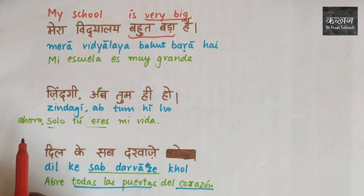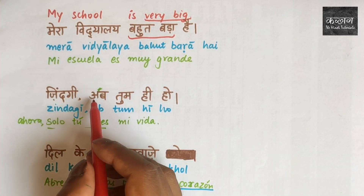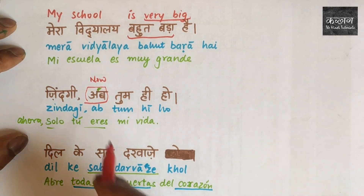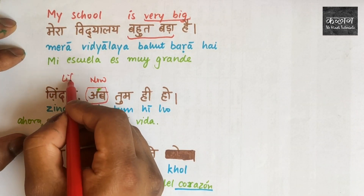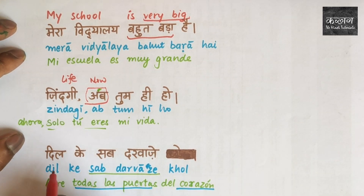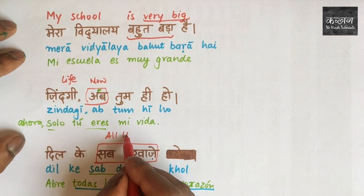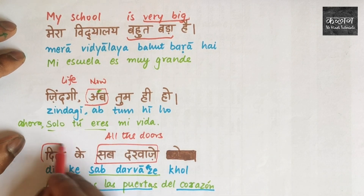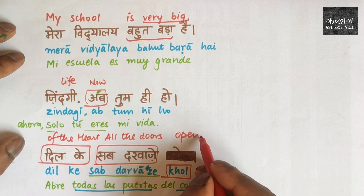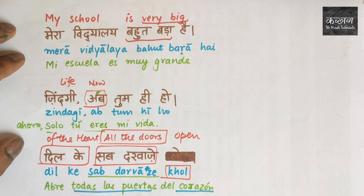The next example is a part of the song 'Tum Hi Ho'. The line is: 'Zindagi ab tum hi ho' — now only you are my life. 'Ab' means now. The next line from a song says: 'Dil ke sab darwaze khol' — open all the doors of your heart. 'Sab darwaze' means all the doors, 'dil ke' means of the heart, and 'khol' means open.